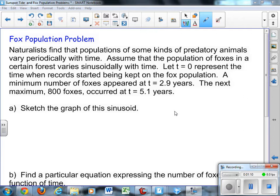2.9 years after the population started to be recorded, notice that the population reached a minimum of 200 because then it started to go back up again. And then at 5.1 years after the first population was recorded, notice that it hit a maximum of 800 because it got up to 800 and then started to go down.